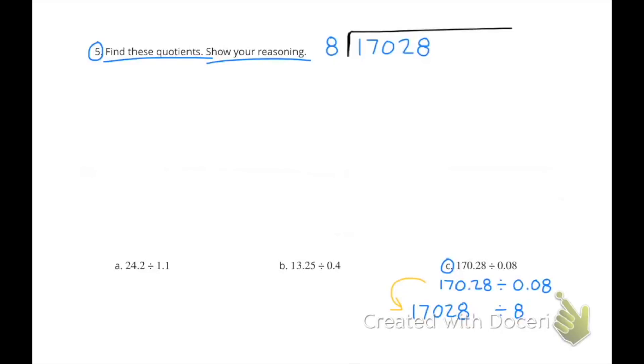C: 170.28 divided by 0.08. That's the same as 17,028 divided by 8. And 17,028 divided by 8 equals 2,128.5.